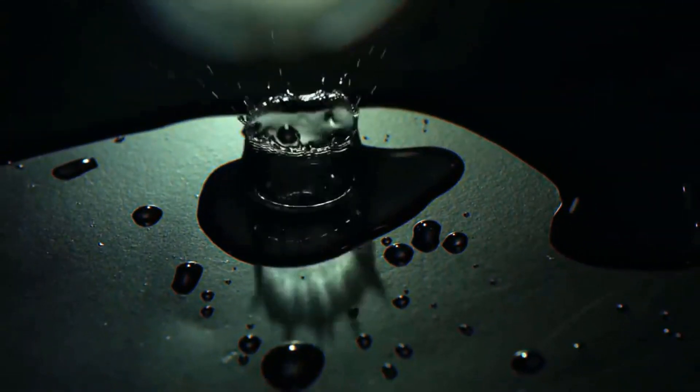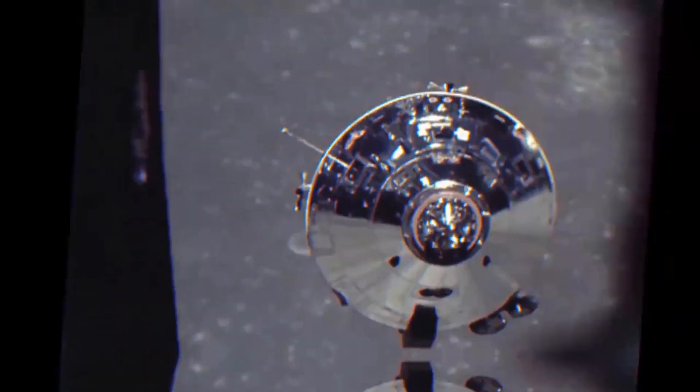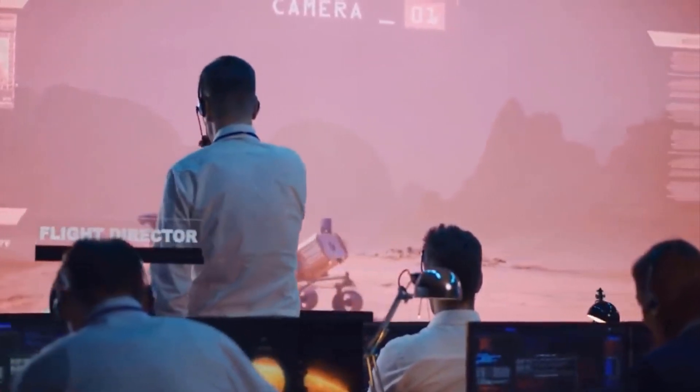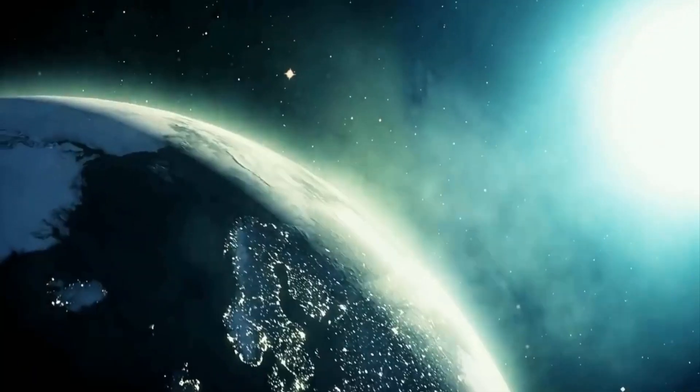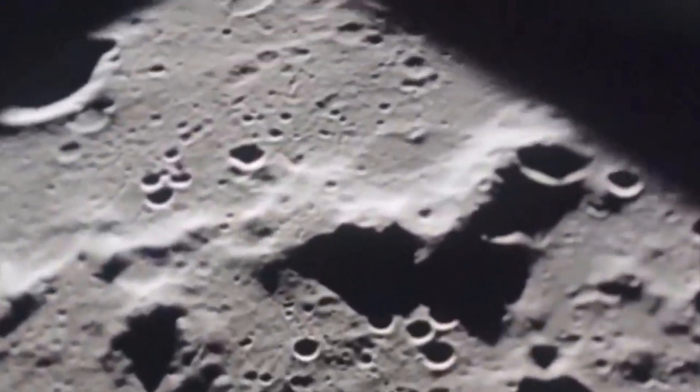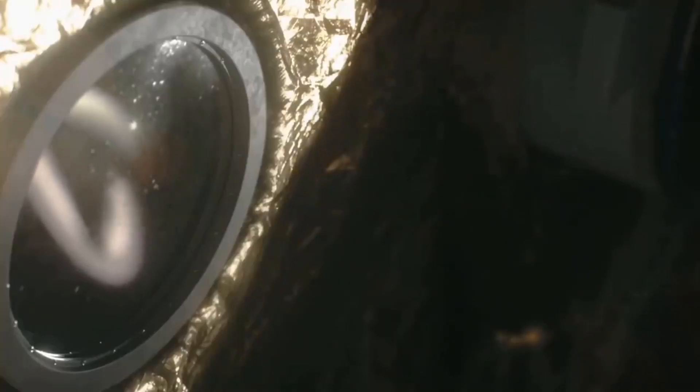Enceladus is the most reflective body in the solar system. For decades, scientists didn't know why. Because Enceladus reflects so much sunlight, the surface temperature is extremely cold, about minus 330 degrees Fahrenheit. But it is not as cold and inactive a place as it appears.